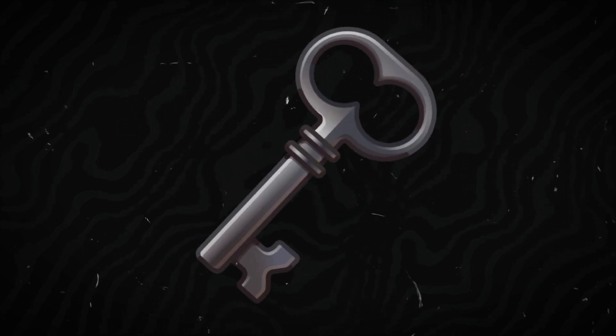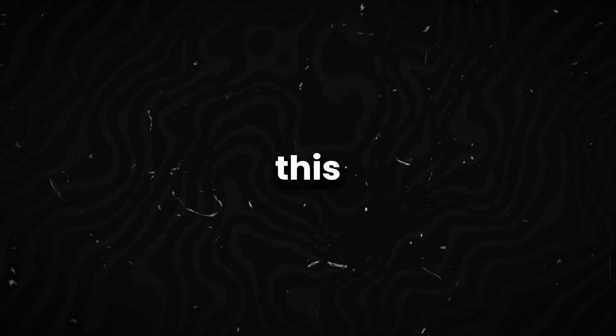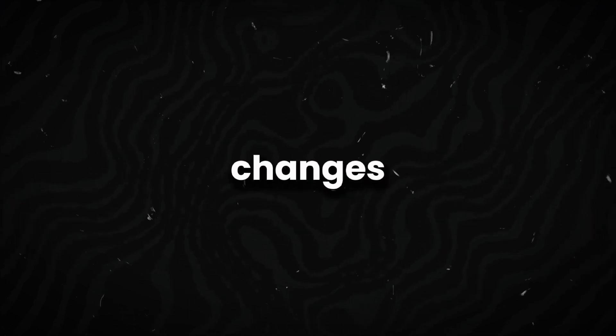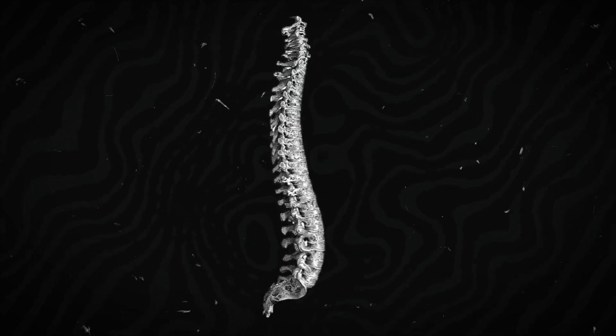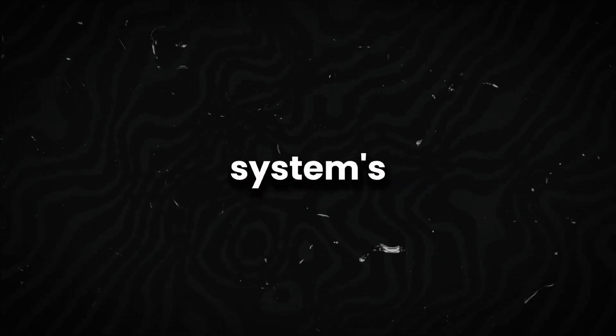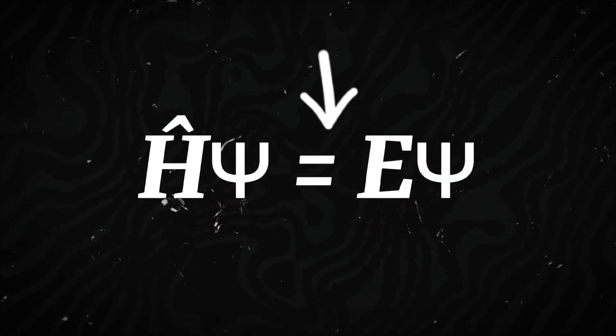Now, let's touch on some of the key formulas that define quantum physics. Schrodinger's equation describes how the quantum state of a physical system changes over time. It's the backbone of quantum physics. This equation is used when the system's energy is conserved. Hamiltonian operator psi equals total energy psi.